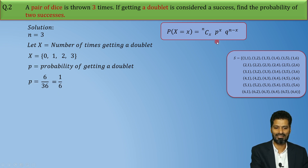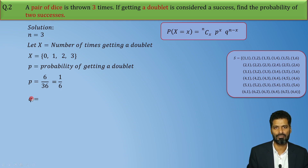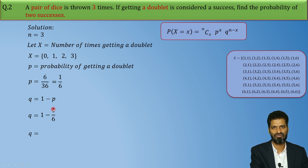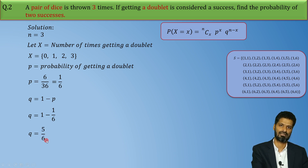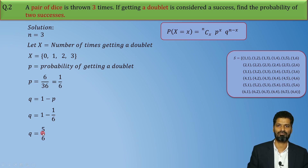After finding P, next we find the value of Q. What is Q? Q is the probability of failure. And failure is the complement of success. So Q can always be found as 1 minus P. So in the next step, Q = 1 minus 1/6 = 5/6. So we have successfully found N = 3, P = 1/6, and Q = 5/6.